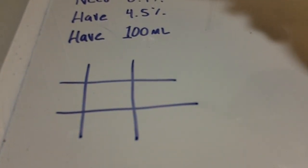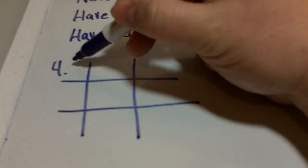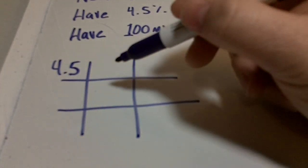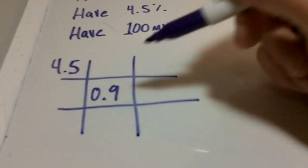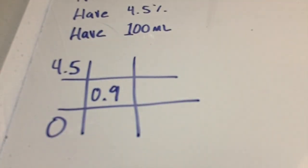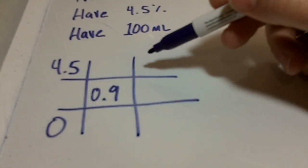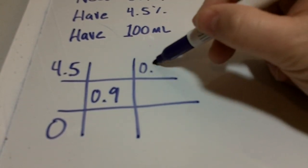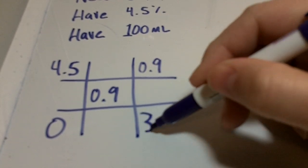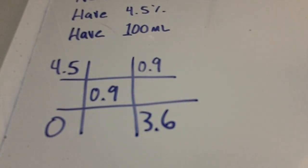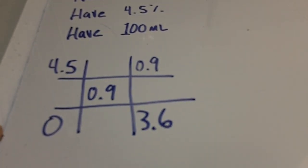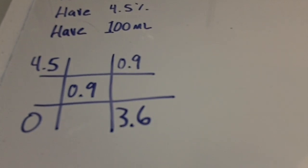All right, so we have 4.5 and what we want is 0.9, and also we have water which is zero. So working this way we get 0.9, working this way we get 3.6. All right, and so from here